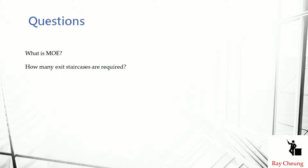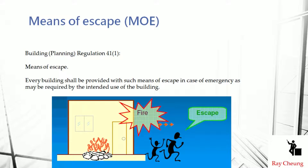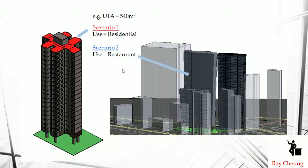First of all, there are two simple questions: Do you know what MOE is, and how many exit staircases are required in your building? When you refer back to the building planning regulations, Means of Escape is something used in case of emergency, so people can escape from the intended use of the building. In case of fire, they can escape. For example, if I have a usable floor area of 540 and the use is residential, or another scenario where the use is a residential restaurant — how many staircases are required for this building?